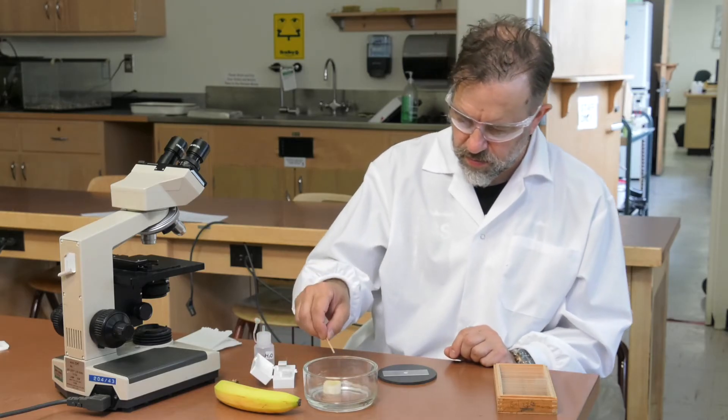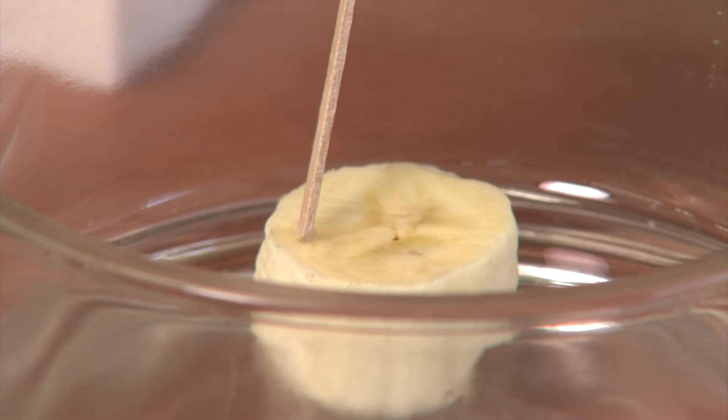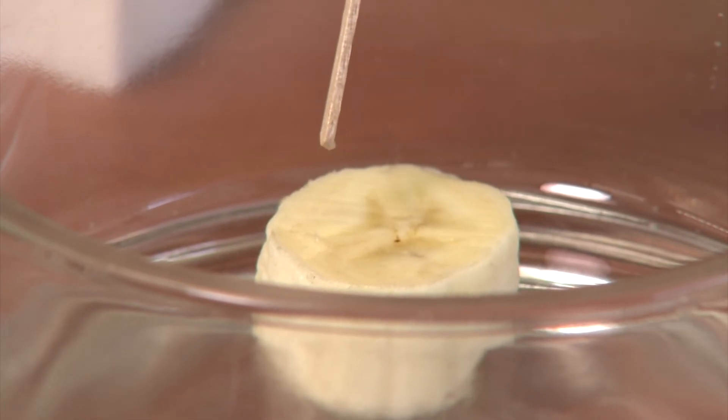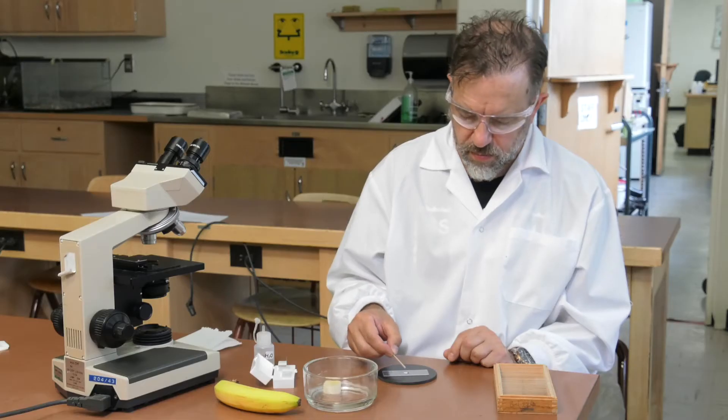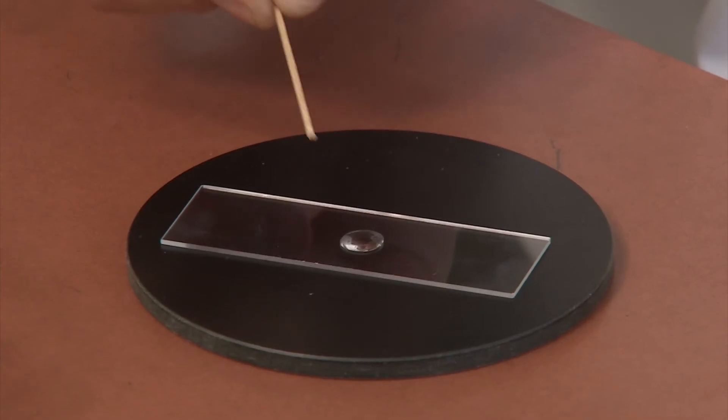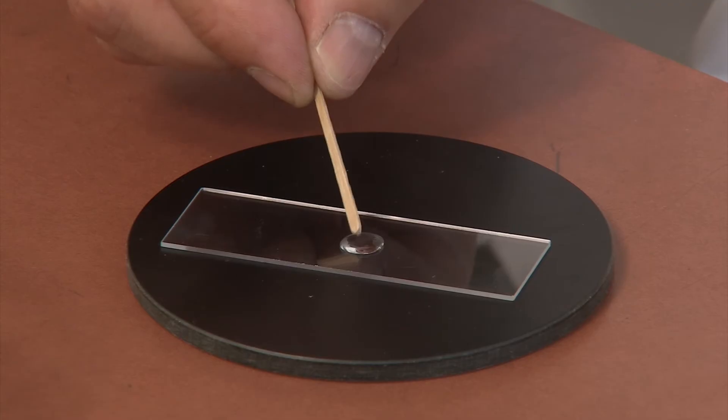Take a toothpick and gently touch the blunt end to the piece of banana fruit. You don't want to dig into the fruit or pick up a clump of tissue. Stir the end of the toothpick in the drop of water.